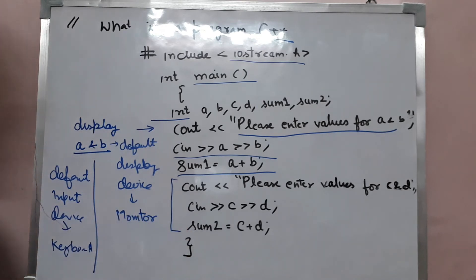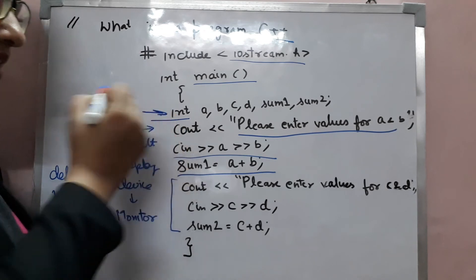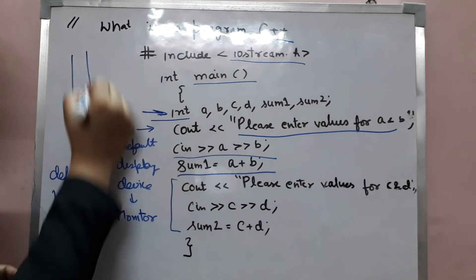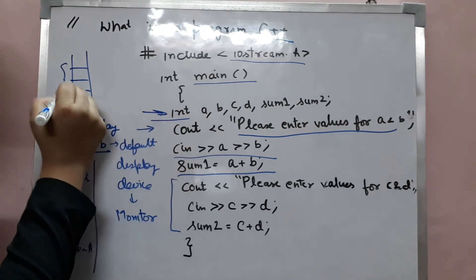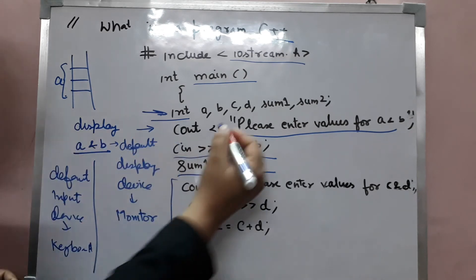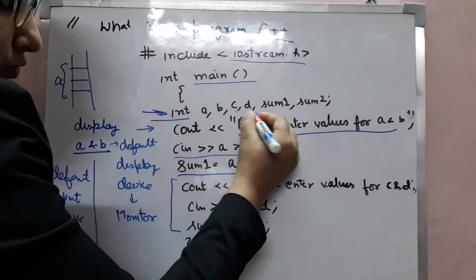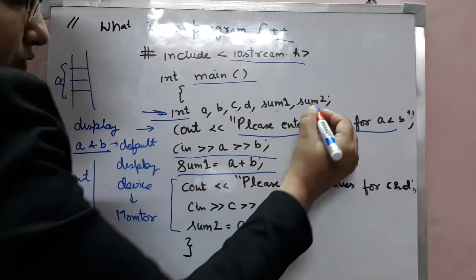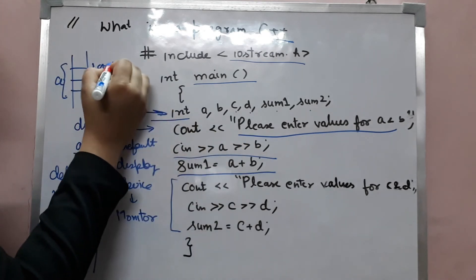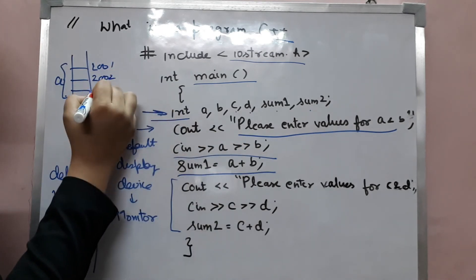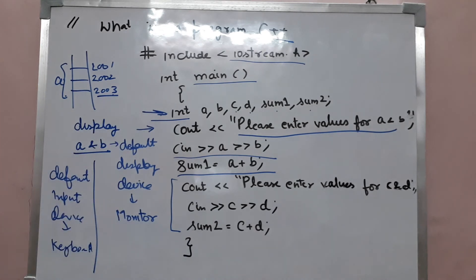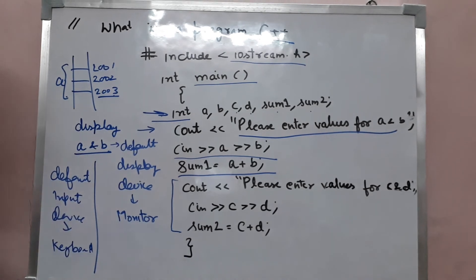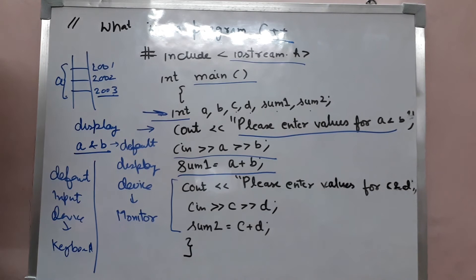So a program is basically a sequence of statements. Each statement tells computer what to do. For example, this statement tells computer to reserve two bytes of memory for variable A, two bytes for B, two for C, two for D, two for sum1 and two for sum2. And they are located in some different memory addresses. So this is the concept of program.